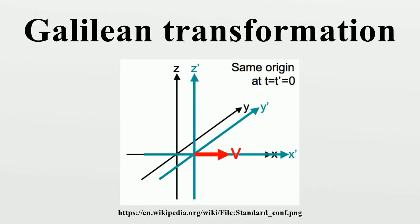In physics, a Galilean transformation is used to transform between the coordinates of two reference frames which differ only by constant relative motion within the constructs of Newtonian physics.